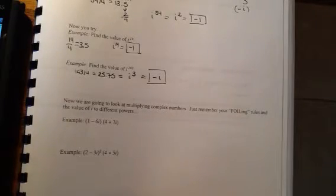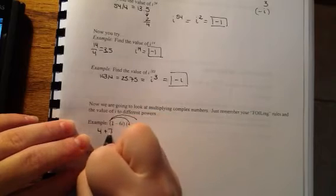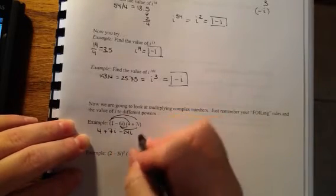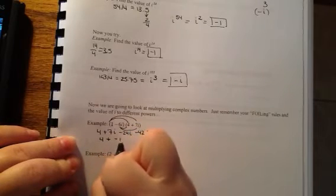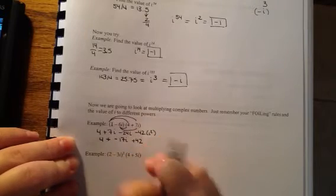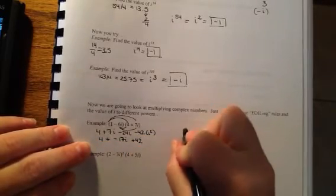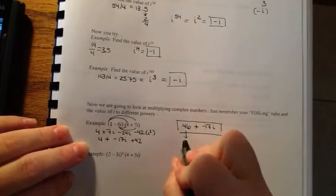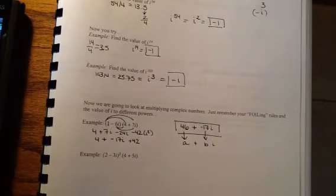Now at the bottom we're going to multiply. So we're going to FOIL these out. 1 times 4 is 4, 1 times 7i is 7i, negative 6i times 4 is negative 24i, and negative 6i times positive 7i is negative 42i squared. When I combine these middle two, you get 4 plus negative 17i, and this piece becomes positive 42 because i squared is negative 1. So I write 46 plus negative 17i. Please note I put this in a plus bi form. It's in standard form. That's how you need to write your answers.